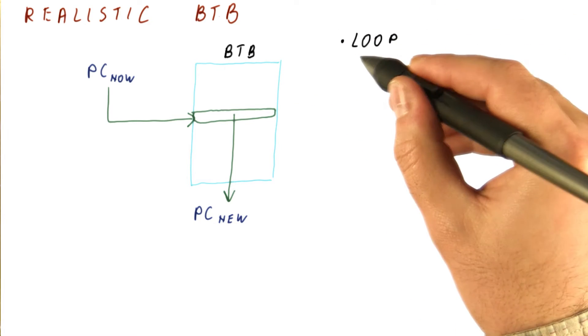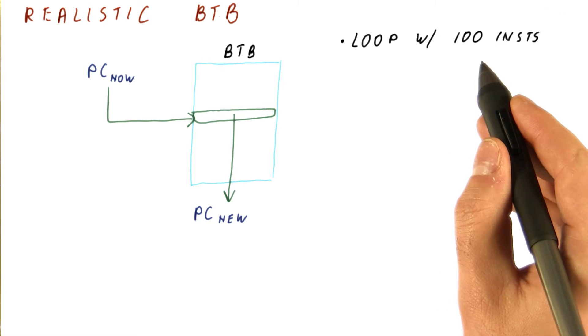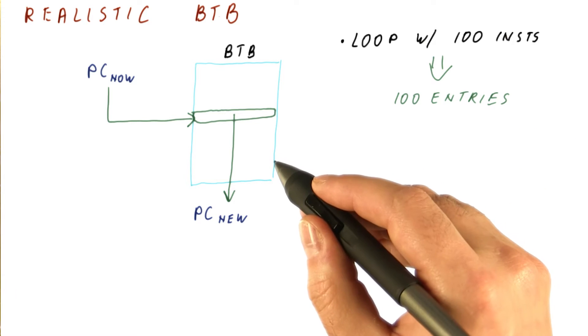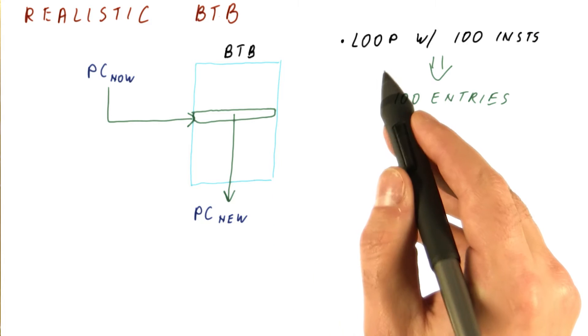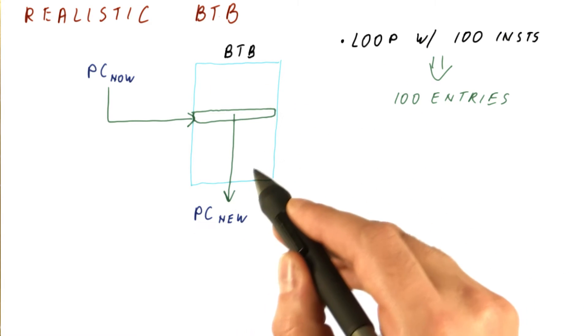So for example, if our program is executing a loop that has about 100 instructions of code, we really need only slightly more than 100 entries. After the first iteration of the loop, the B2B will be populated with instructions in the loop, at which point we will keep finding what we need in the B2B.